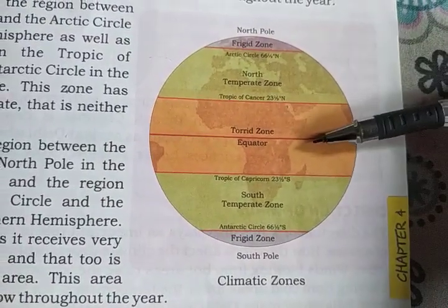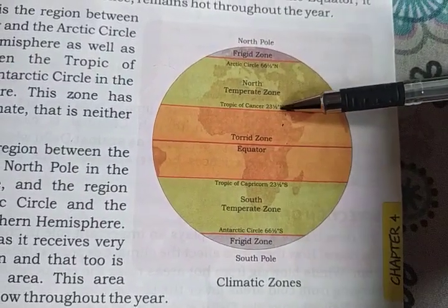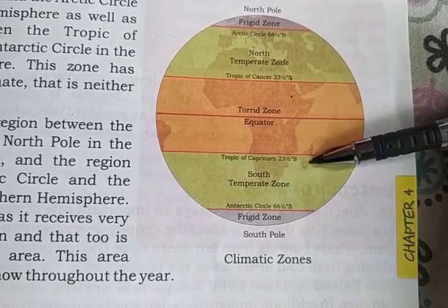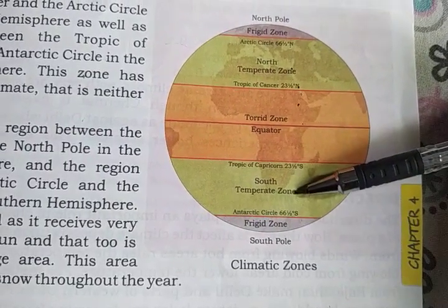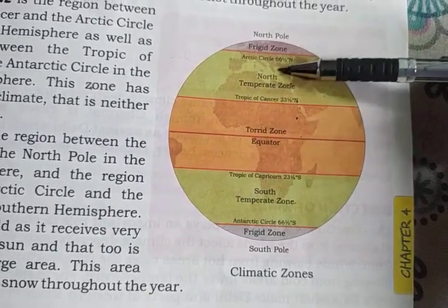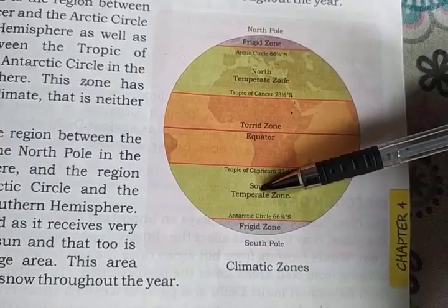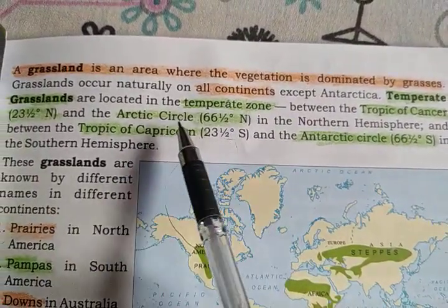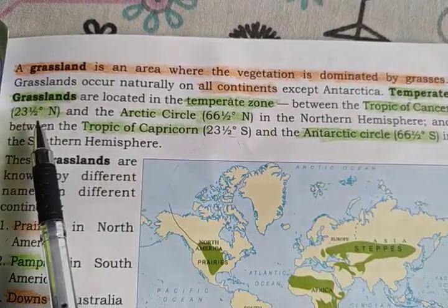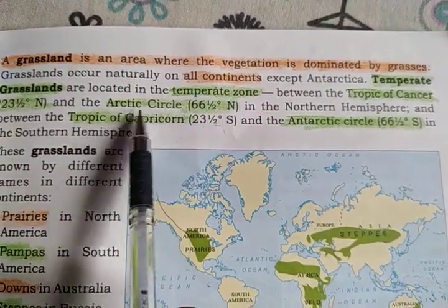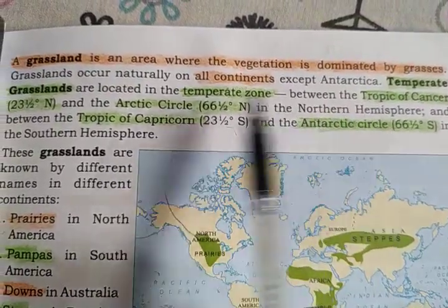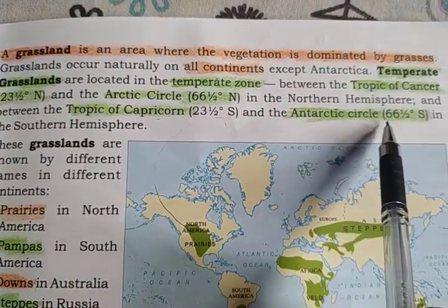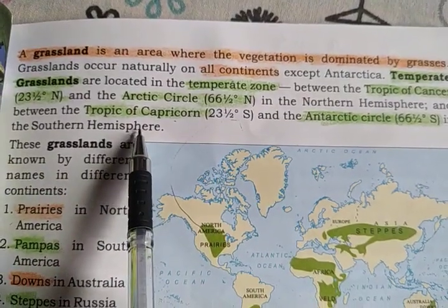See this diagram. This is the torrid zone, and here between the Tropic of Cancer and Arctic Circle we have the north temperate zone, and between the Tropic of Capricorn and Antarctic Circle we have the south temperate zone. The temperate zone lies between Tropic of Cancer 23.5° north and Arctic Circle 66.5° north in the northern hemisphere, and between Tropic of Capricorn 23.5° south and Antarctic Circle 66.5° south in the southern hemisphere.